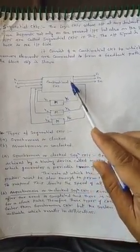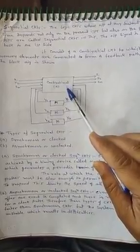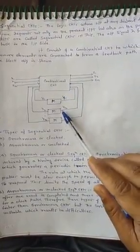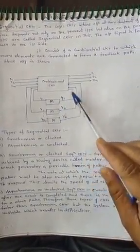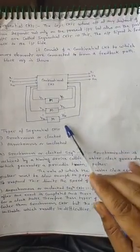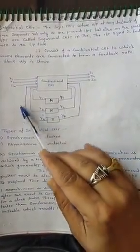There are two parts: first is combinational circuit and second is memory element. The output is feedback by these memory elements to the input side.